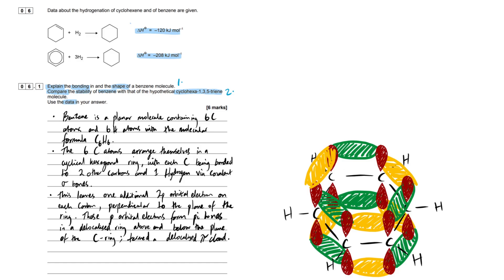This leaves one additional 2p orbital electron on each carbon perpendicular to the plane of the ring. These p-orbital electrons form pi bonds in the delocalized ring above and below the plane of the carbon ring, termed a delocalized pi cloud. Depending on which textbook you look at, it's called different things. As long as you focus on it being delocalized, a cloud or ring or system, you'll be fine. For six marks, show off with chemistry terminology.